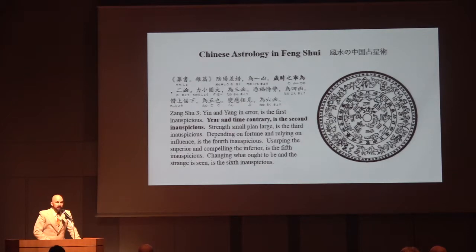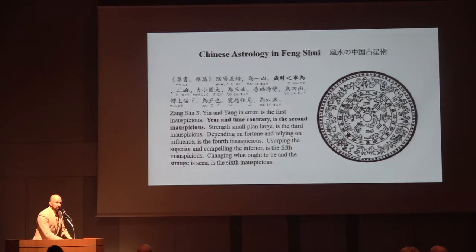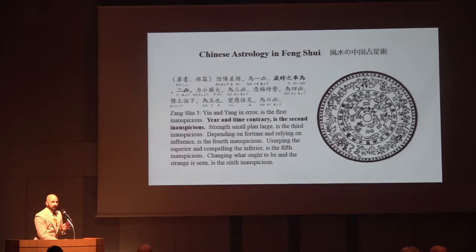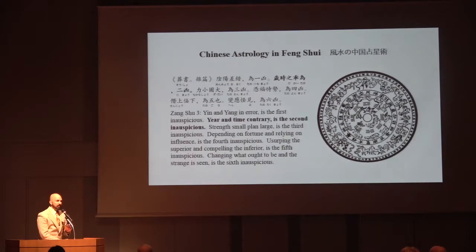It's called the burial classic but it applies equally to dwellings — in the text itself, it uses dwelling and burial interchangeably. This is a quote from the Zah Pian, the miscellaneous chapter, the final chapter, which talks mostly about feng directions. From the section called 'the three auspicious and the six inauspicious': 'Yin and yang in error is the first inauspicious' — this talks specifically about facing directions. 'Year and time contrary is the second inauspicious' — this tweaked my interest. This is in the original feng shui classic talking about what we would now call date selection or auspicious time, but specifically in the context of a dwelling — not whether it's a good day to get married or cut your hair.